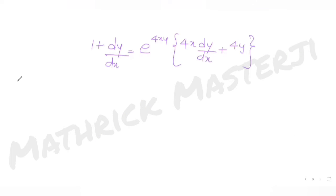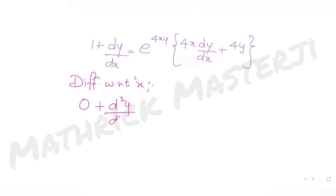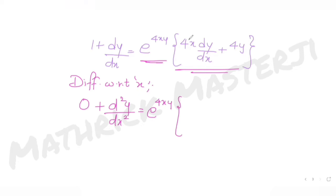Now differentiating this entire expression again with respect to x: the derivative of 1 is 0, and the derivative of dy/dx is d²y/dx². Applying the product rule to the right side, I write e^(4xy) as it is, times the derivative of the bracket, giving 4 times (x·(d²y/dx²) plus dy/dx times 1).